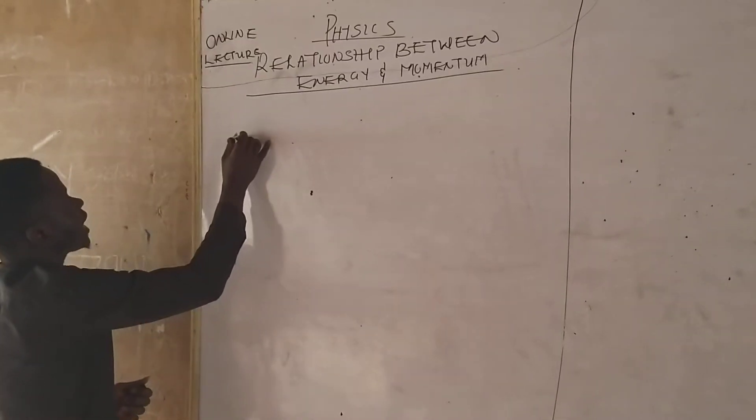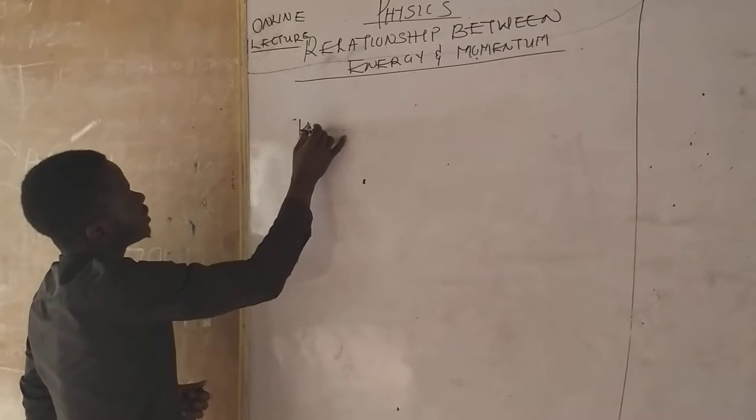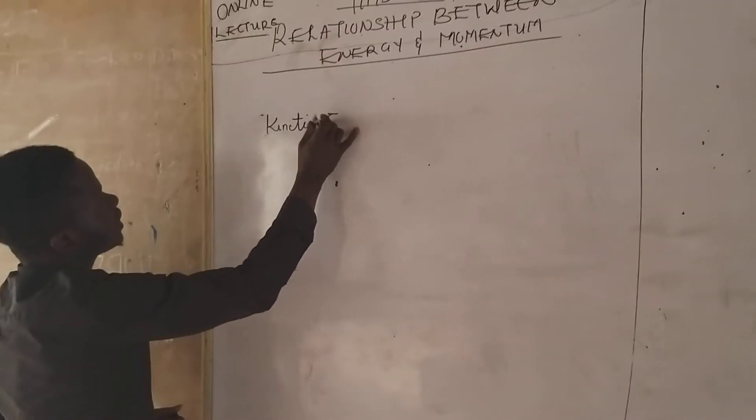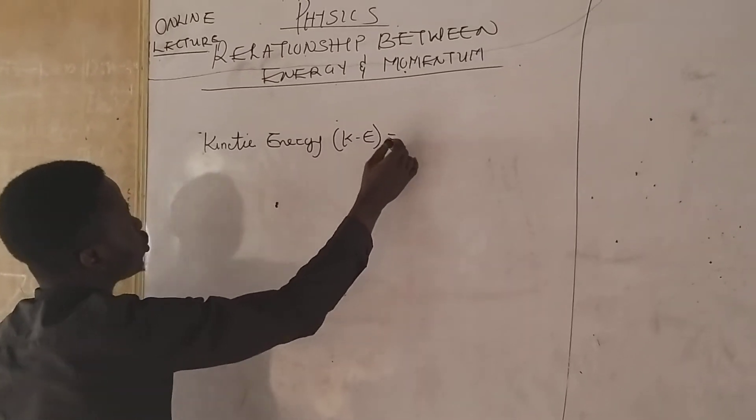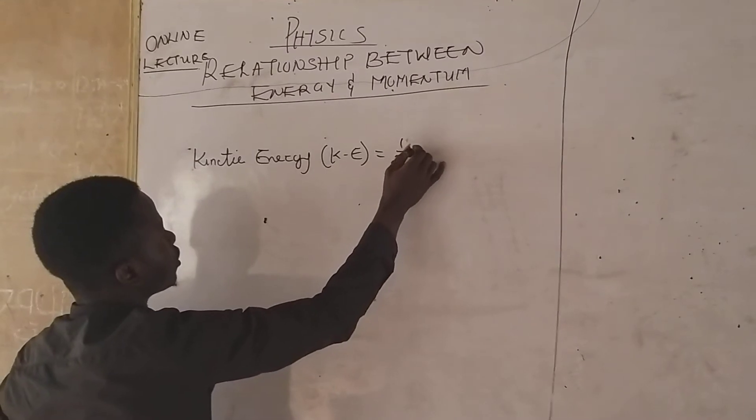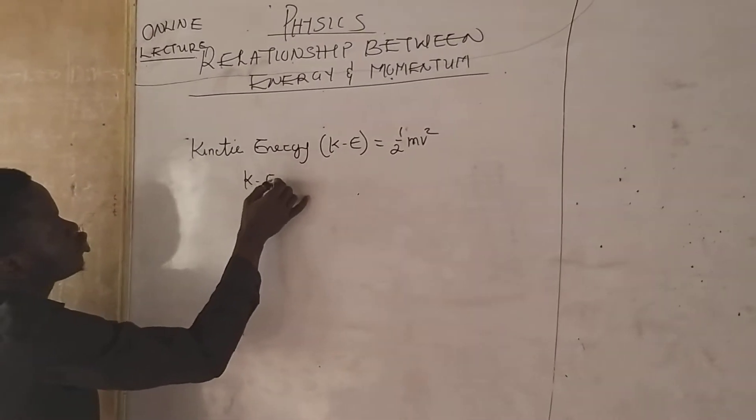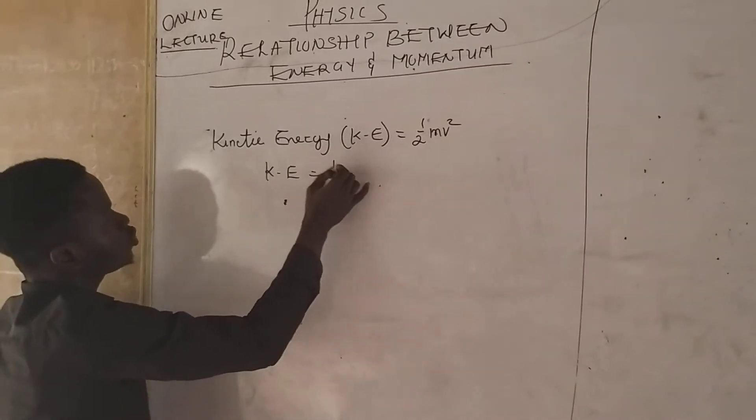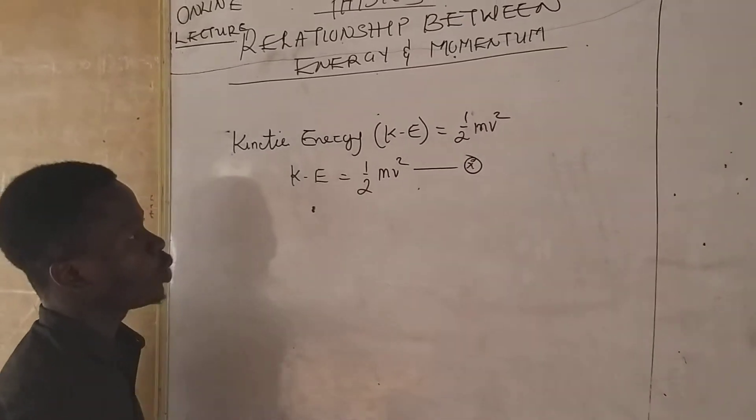Now I am using kinetic energy, KE. Kinetic energy, which is KE, is equal to 1 over 2 Mv squared. So we have KE to be equal to 1 all over 2 Mv squared. We call it equation 1.